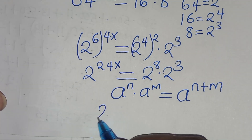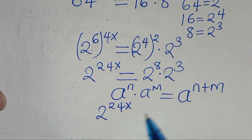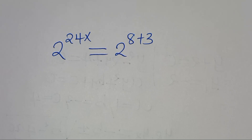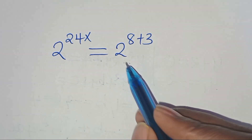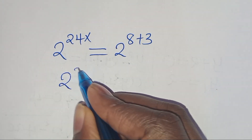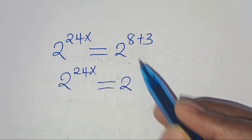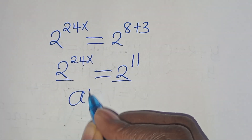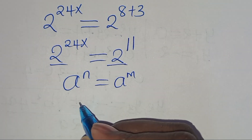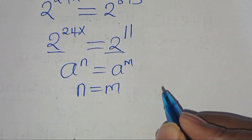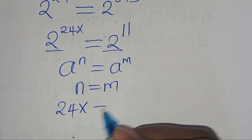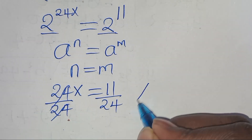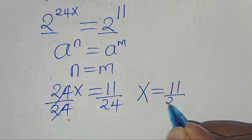So this implies that here we have 2 to the power of 24x, this is equal to 2 to the power of 8 plus 3, which is 2 to the power of 11. Since the bases are common — that is a to the power of n equals a to the power of m means exponent n equals m — this implies that 24x equals 11. So let's divide both sides by 24, so that the value of x is equal to 11 over 24.